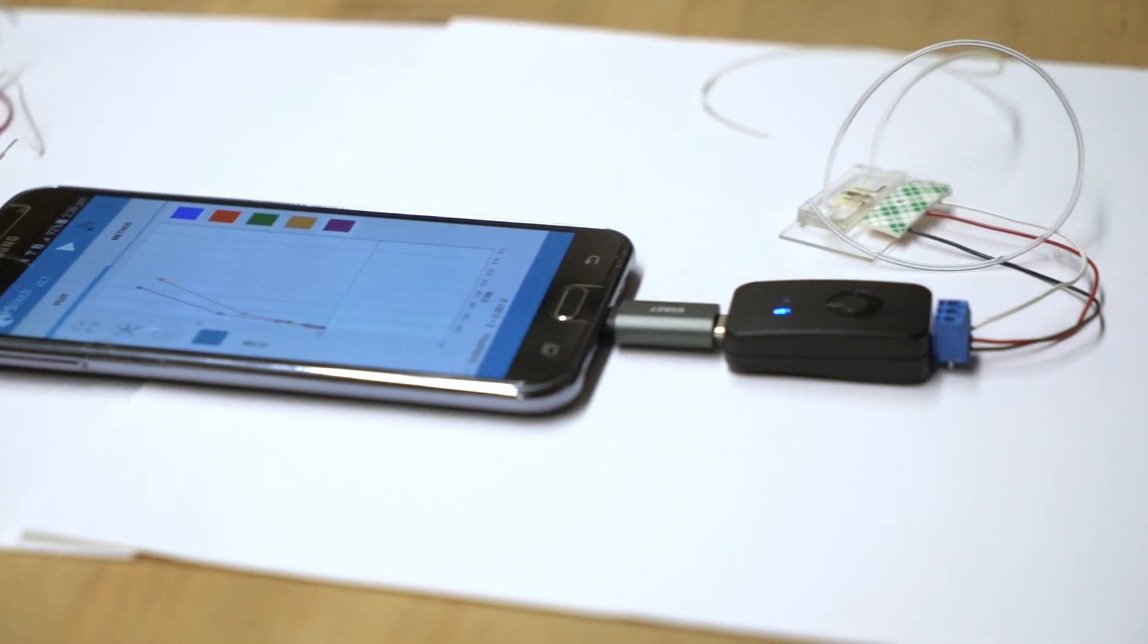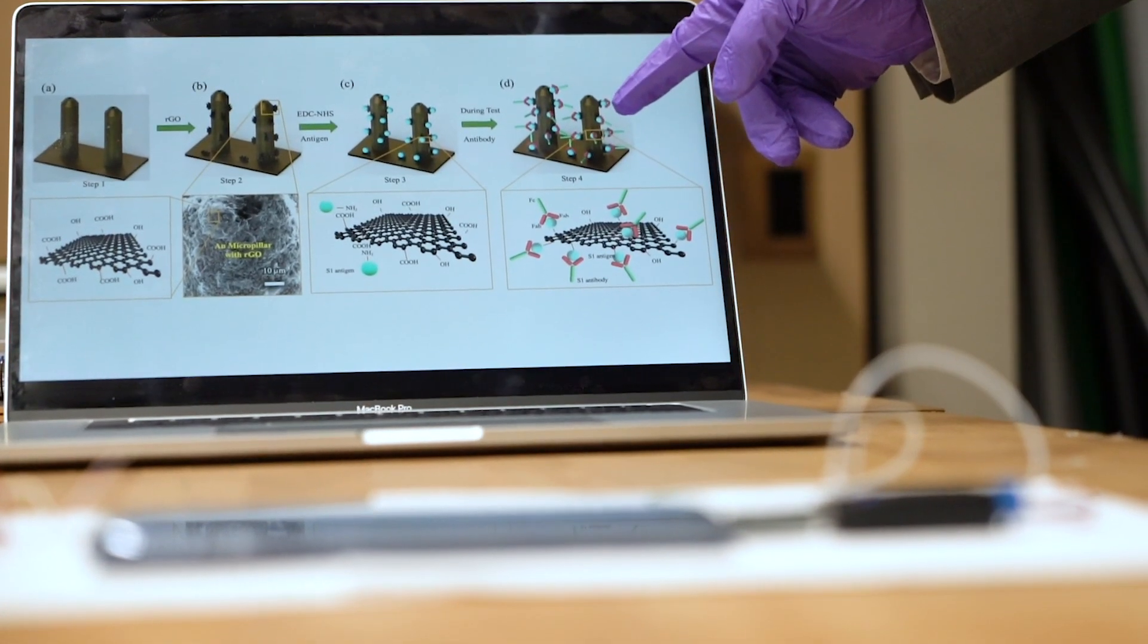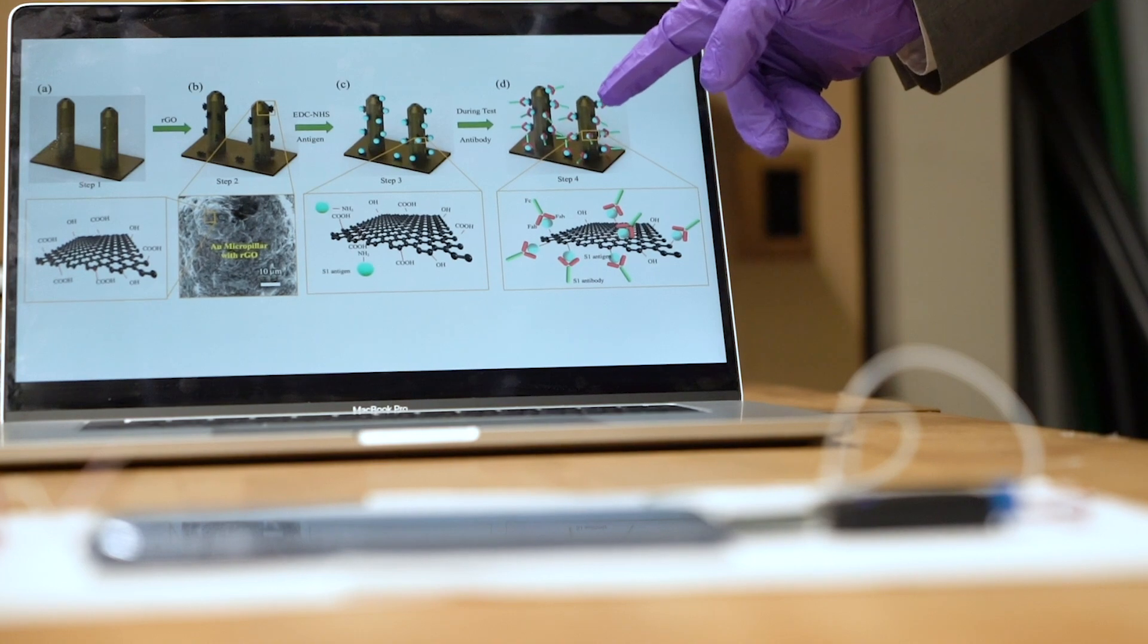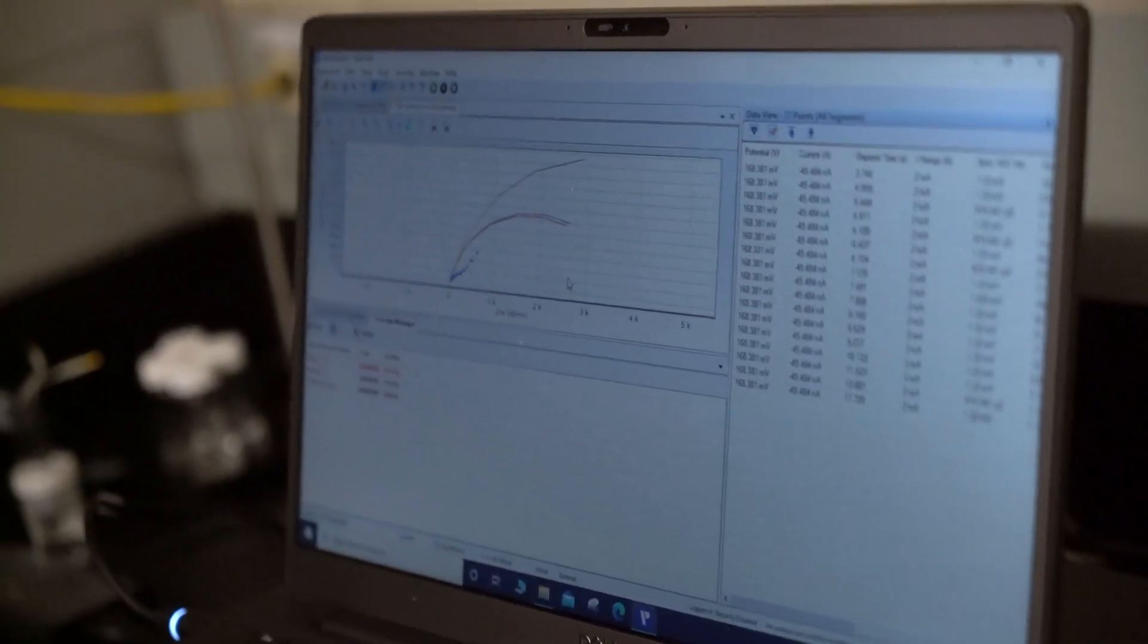This device has three-dimensional architected electrodes fabricated by 3D nanoparticle printing, which is a method developed at CMU. It enhances the efficiency of detection down to one picomolar concentration.